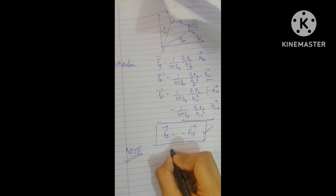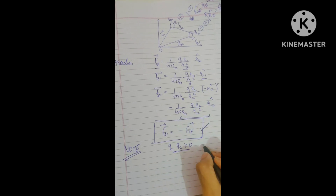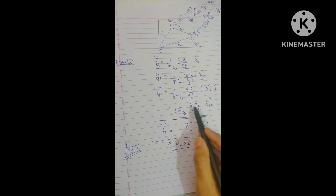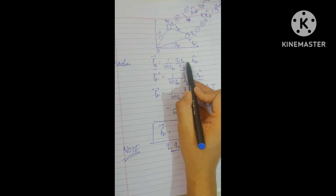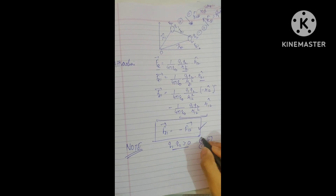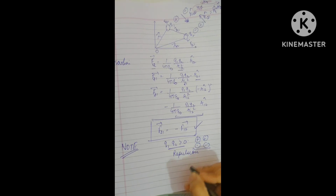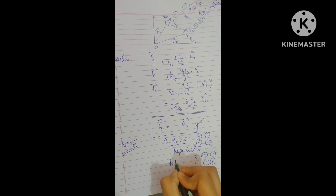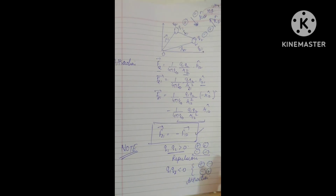One more point: if the value of q1·q2 is greater than zero, both charges are of the same sign — positive×positive or negative×negative both give a positive result — meaning the force is repulsive. If q1·q2 is less than zero, the charges are of opposite signs and the force is attractive. This is all about Coulomb's law in vector form.